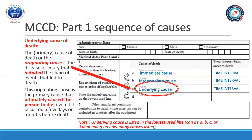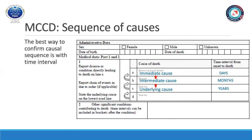Note that the underlying cause of death is listed in the lowest line used. It can be line A, B, C, or D depending on how many causes are listed. The best way to confirm the causal sequence is with time interval. The condition with the longest duration should be listed in the lowest line. If the time interval is unknown, write unknown. If the exact time interval is uncertain, then an estimated time such as hours or minutes is acceptable. A time interval should be included for every condition listed.